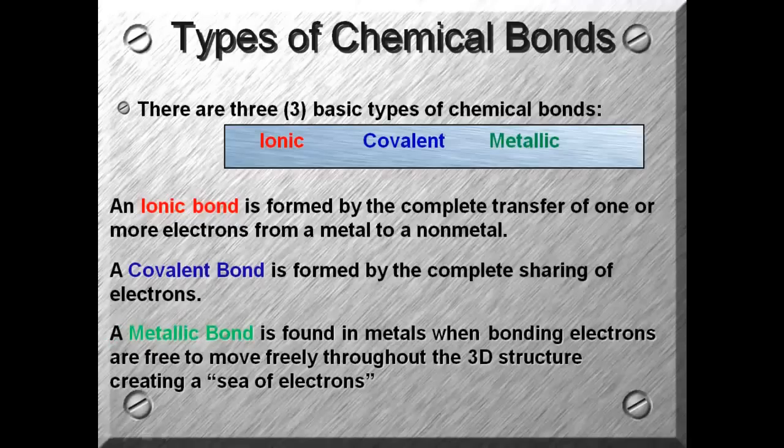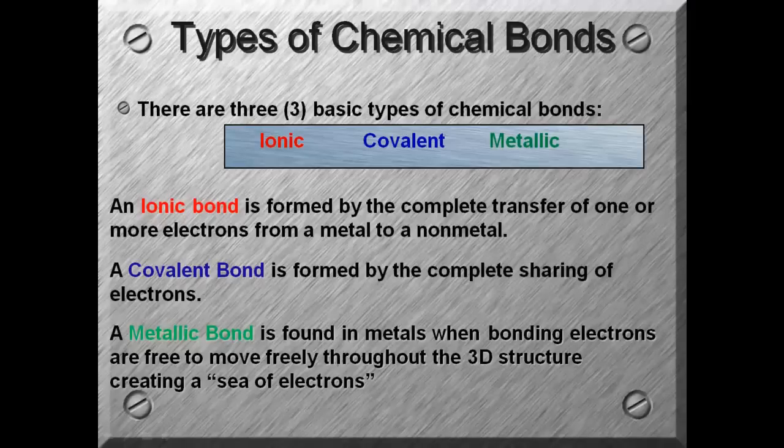And then a metallic bond is found in metals where bonding electrons are free to move throughout the 3D structure and they create the sea of electrons. This is why metals can conduct electricity: because of the ability for these electrons to move throughout.